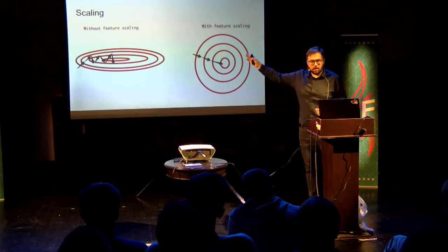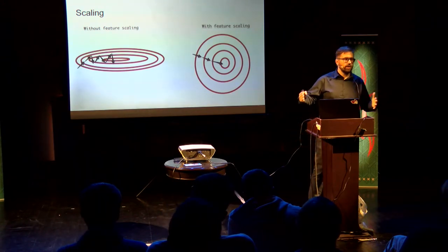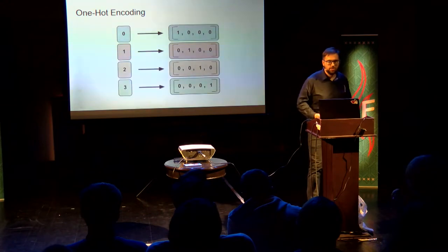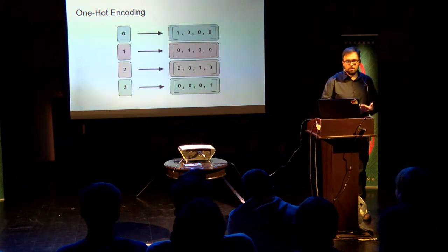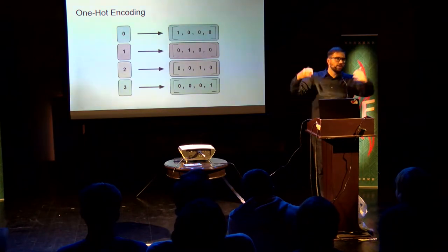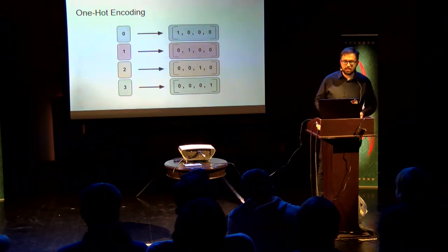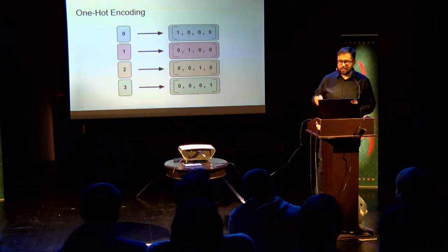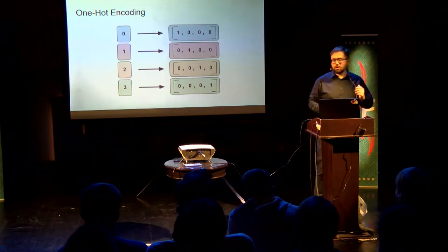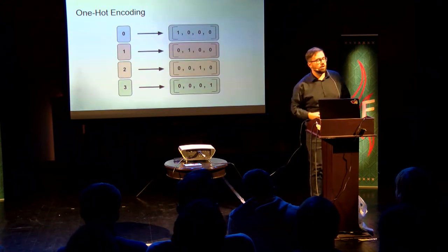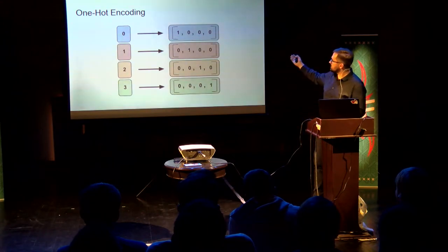Currently Ignite supports two famous scalers: min-max scalar and max-abs scalar, which help to work correctly with learning rate in machine learning algorithms. Of course, most classical algorithms don't support string values or categorical features. Ignite supports one-hot encoding and string indexing with a few different strategies. One-hot encoding is a representation of categorical features as binary vectors.